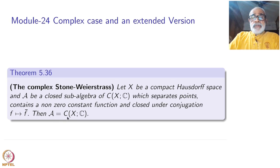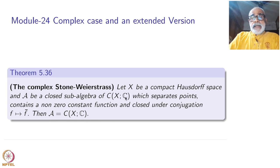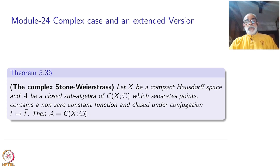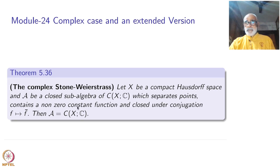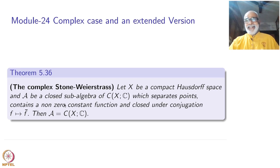Then A is the whole of C(X,C). If you remove the closed-under-conjugation condition and take the field to be R, this is the real Stone-Weierstrass theorem. Corresponding to the theorem of Gadi there is a version here that I will leave as an exercise. We will only concentrate on the main version here.